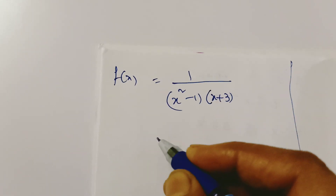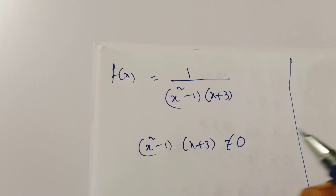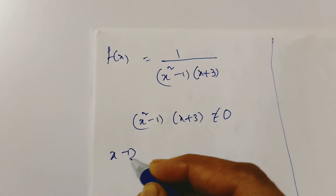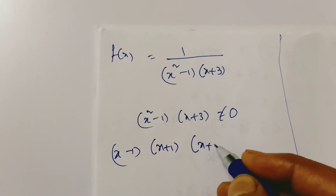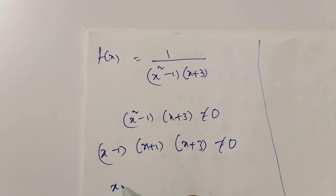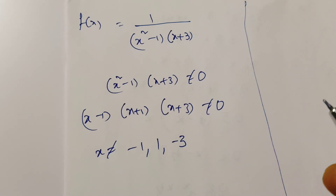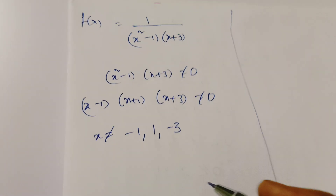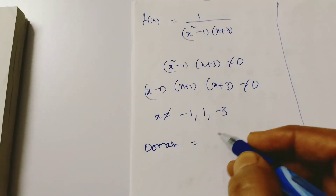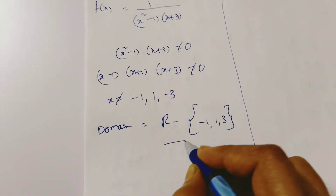For the third function, the given function has x squared plus x minus 3 in the denominator, which must not equal 0. We factor: (x minus 1)(x plus 1)(x plus 3) is not equal to 0. This means x is not equal to minus 1, not equal to 1, and not equal to minus 3. Therefore the domain is R minus {-1, 1, -3}.